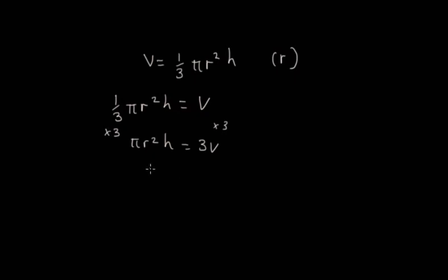Now we're going to get rid of pi h together by dividing both sides by pi h. So that's going to give us r squared equals 3V over pi h. And now to get rid of the squared, we're going to square root.